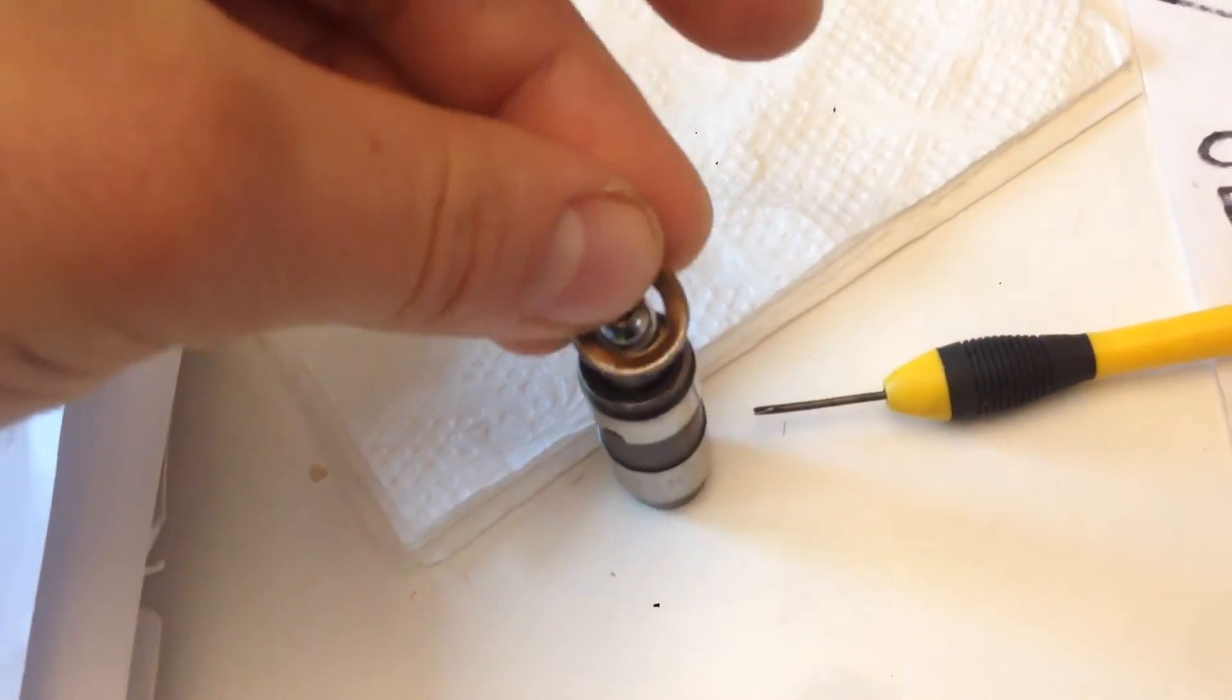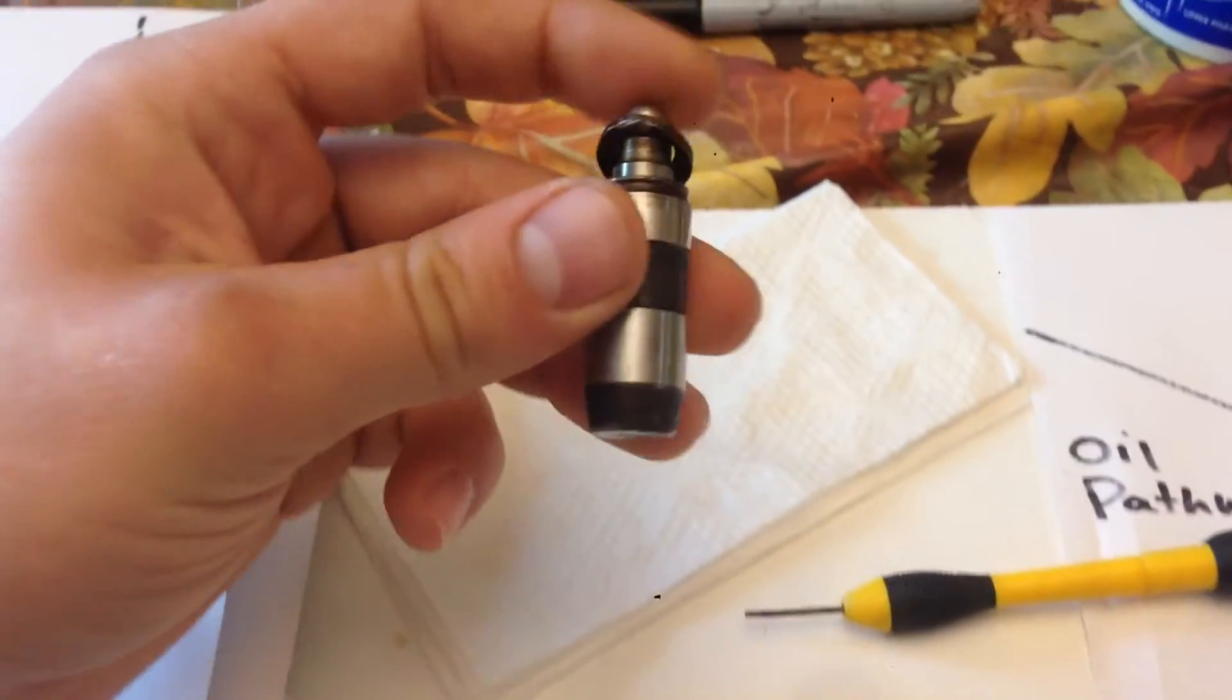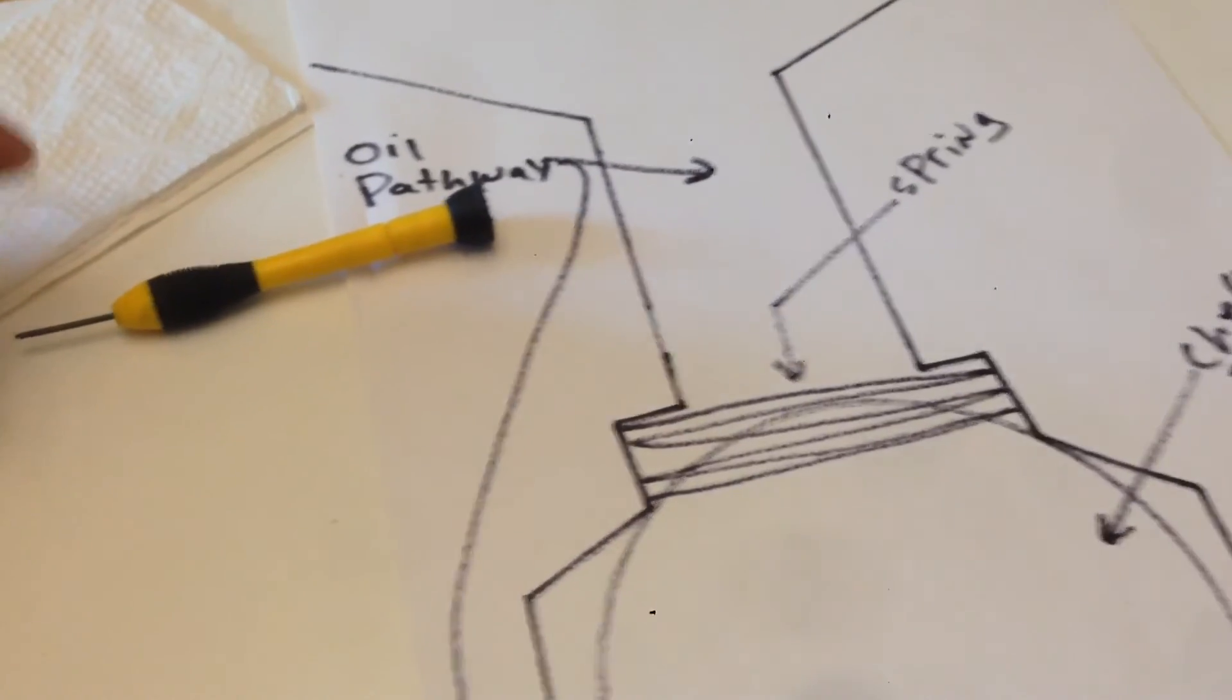They put the retainer on there and crimp it at the factory. So there you go—there's the components of the lash adjuster and how the check ball works.